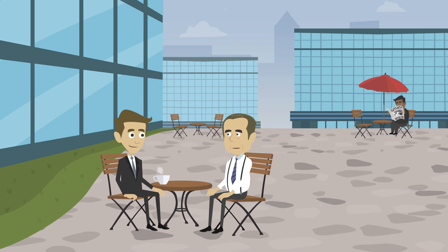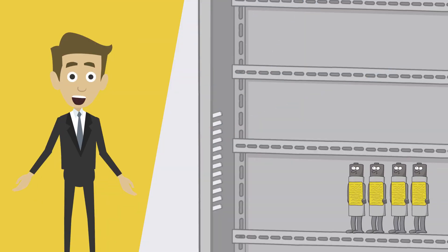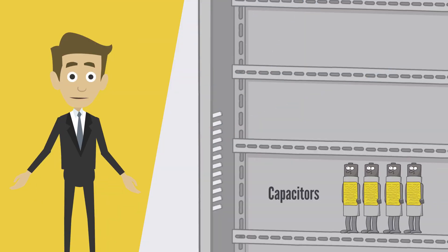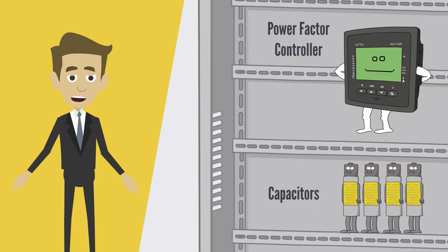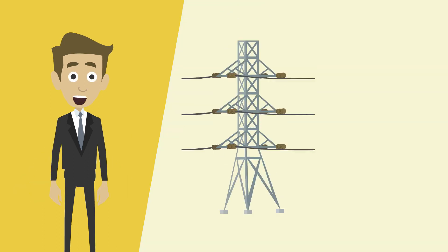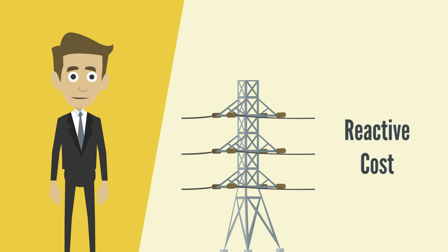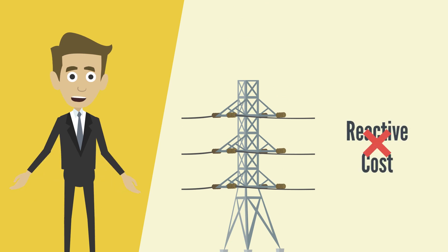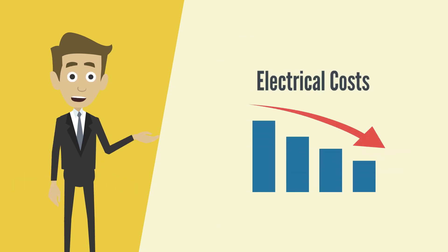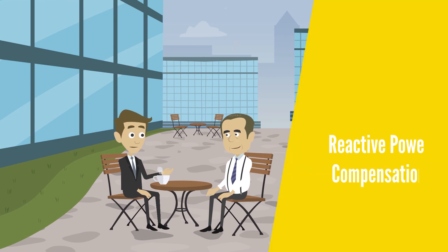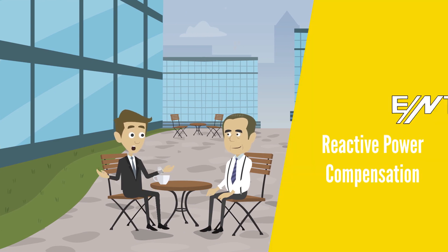Then how can we get the head for the reactive power we need? We do it by installing capacitors on the system and manage these capacitors with reactive power controllers. When we do this, we create no extra load for the main network. Therefore, there are no additional reactive penalties, ensuring that we do not get high bills.